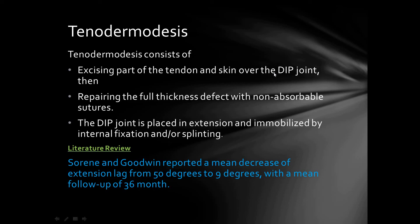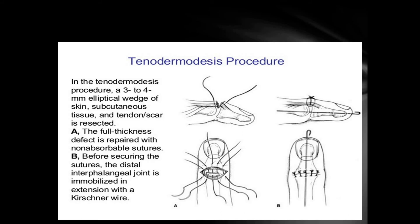In tenodermodesis, excision of part of the tendon and skin over the distal interphalangeal joint is performed. The full-thickness defect — both skin and tendon — is repaired with non-absorbable suture, and the distal interphalangeal joint is placed in extension and immobilized. Literature supports tenodermodesis: Sorin and Goodwin reported a mean decrease in extension lag from 50 degrees to 9 degrees with a mean follow-up of 36 months.